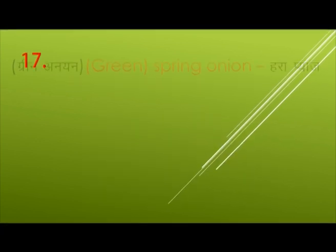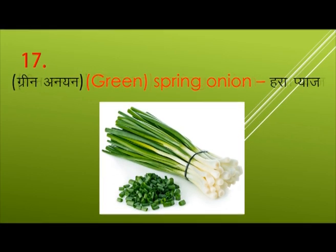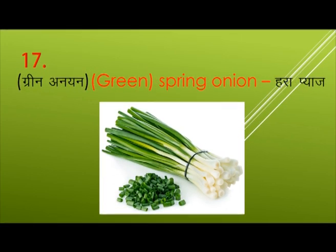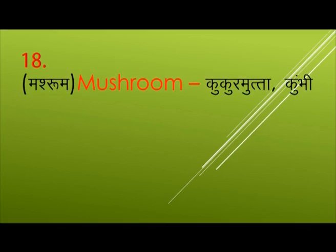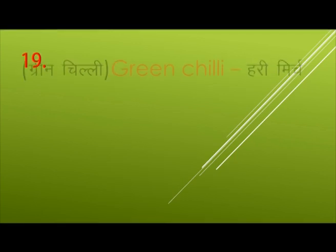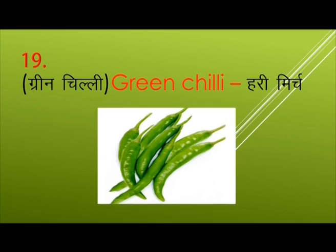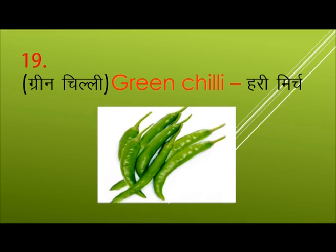Green Onion — Hara Pyaaj. Mushroom — Kukurmutta. Green Chili — Hari Mirch.